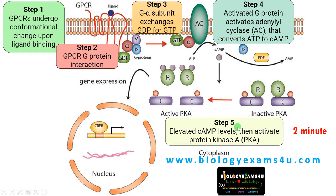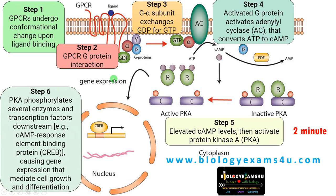High levels of cAMP then activate protein kinase A. This is inactive protein kinase A, with two catalytic subunits and two regulatory subunits. Elevated levels of cAMP activate protein kinase A, an enzyme that phosphorylates several enzymes and transcription factors downstream, such as CREB — the cAMP response element-binding protein — causing gene expression that mediates cell growth and differentiation.